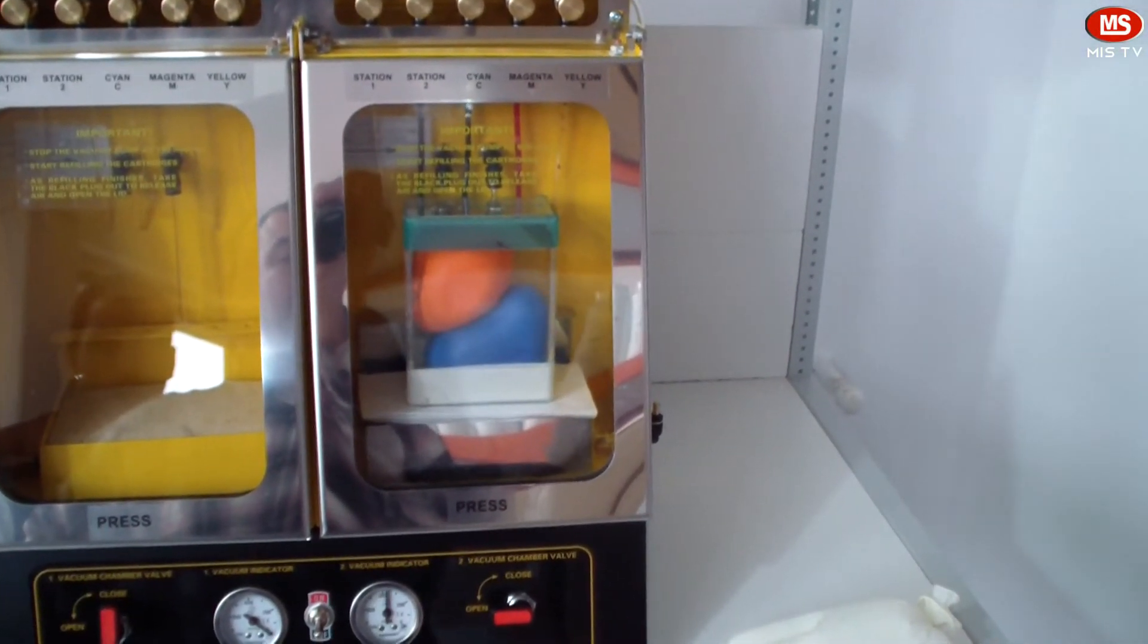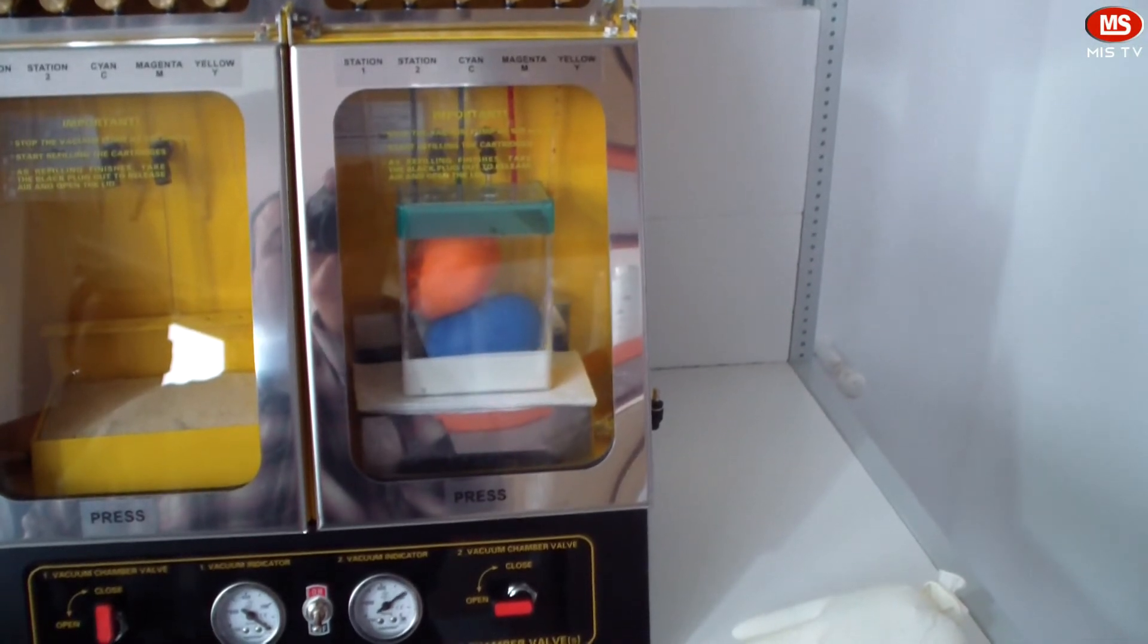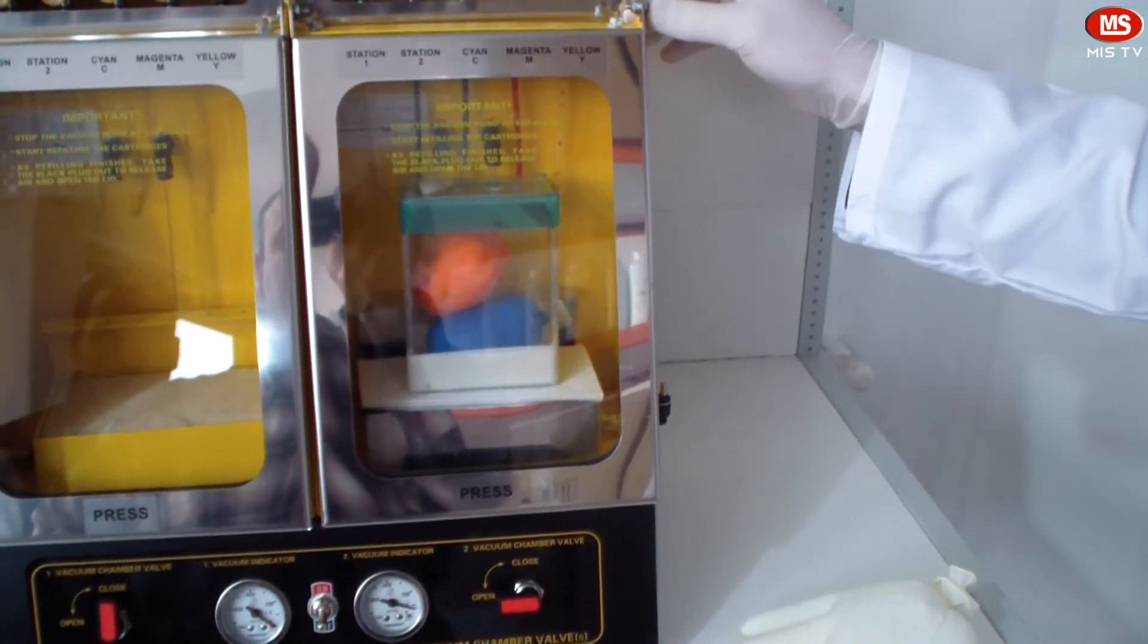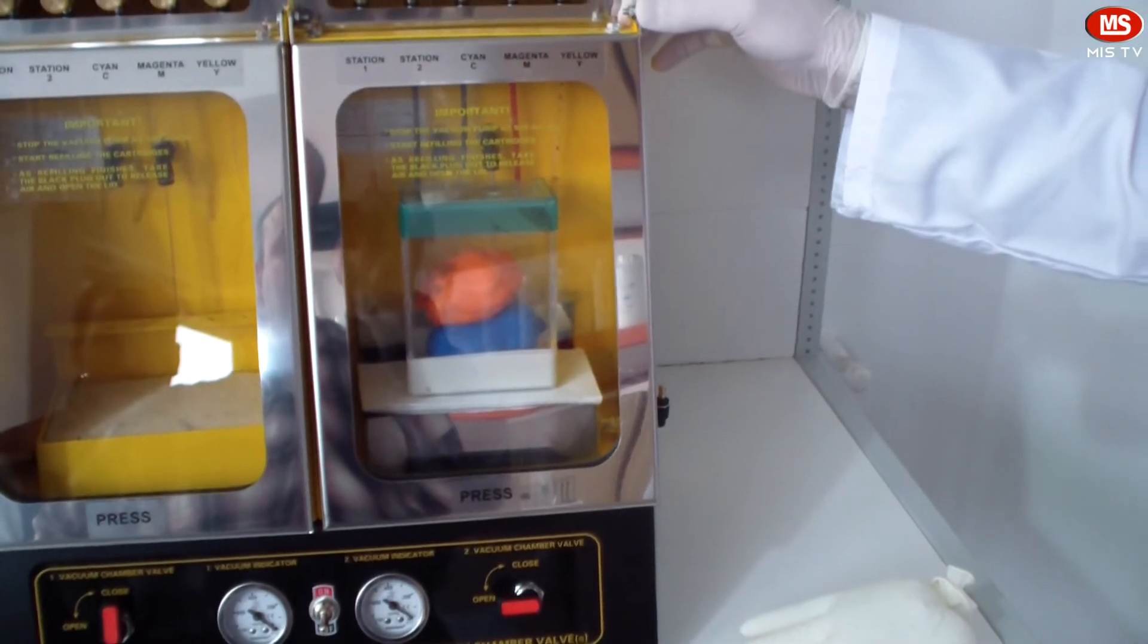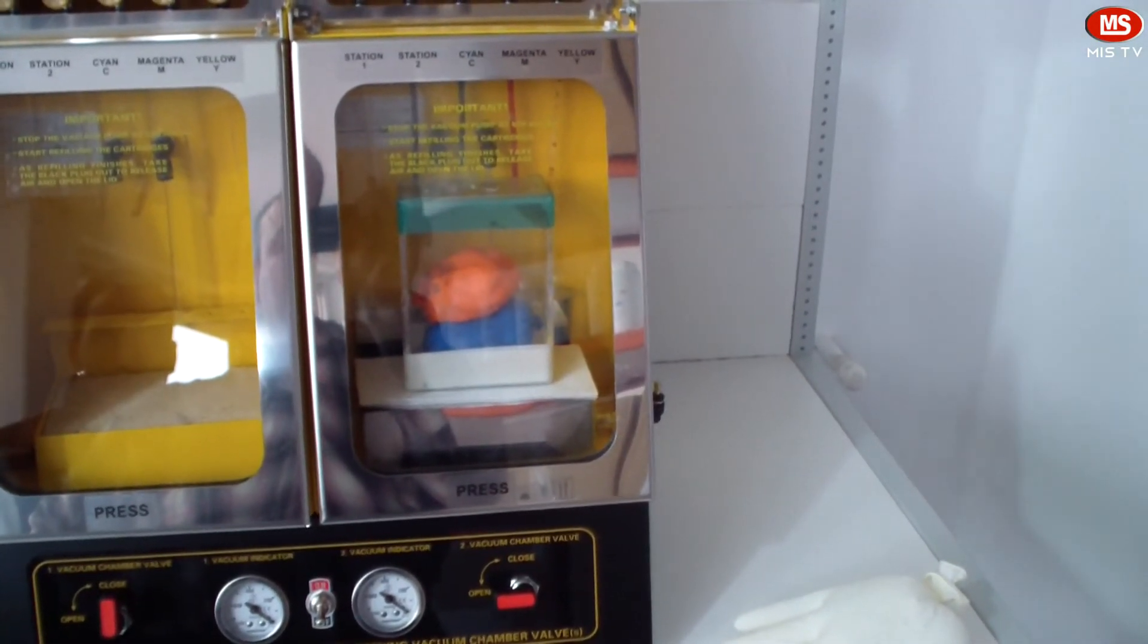After we are done with refilling, we release the vacuum and again the incoming air makes the foam hold the ink. This technique is used in all MIS ink refill machines.